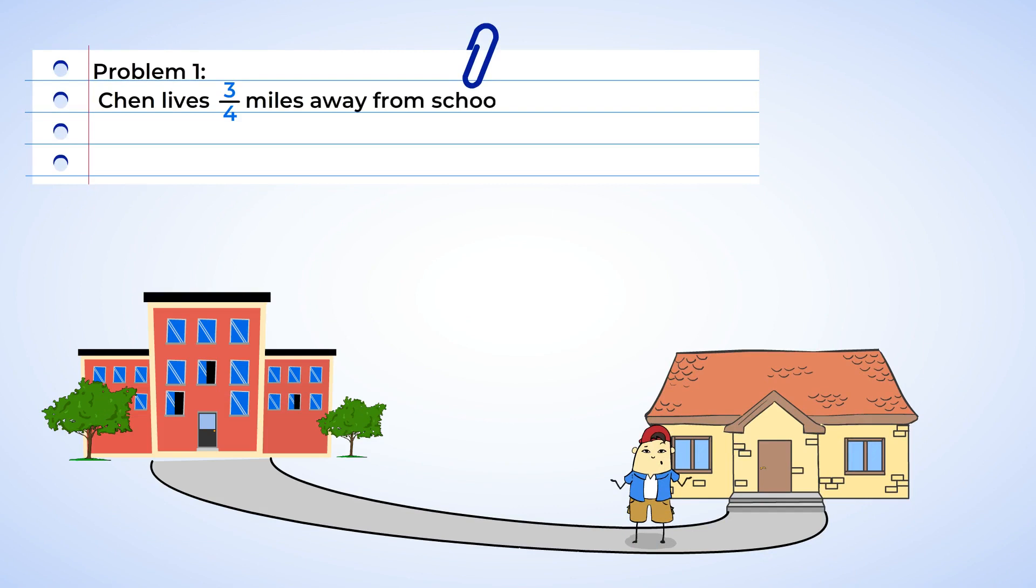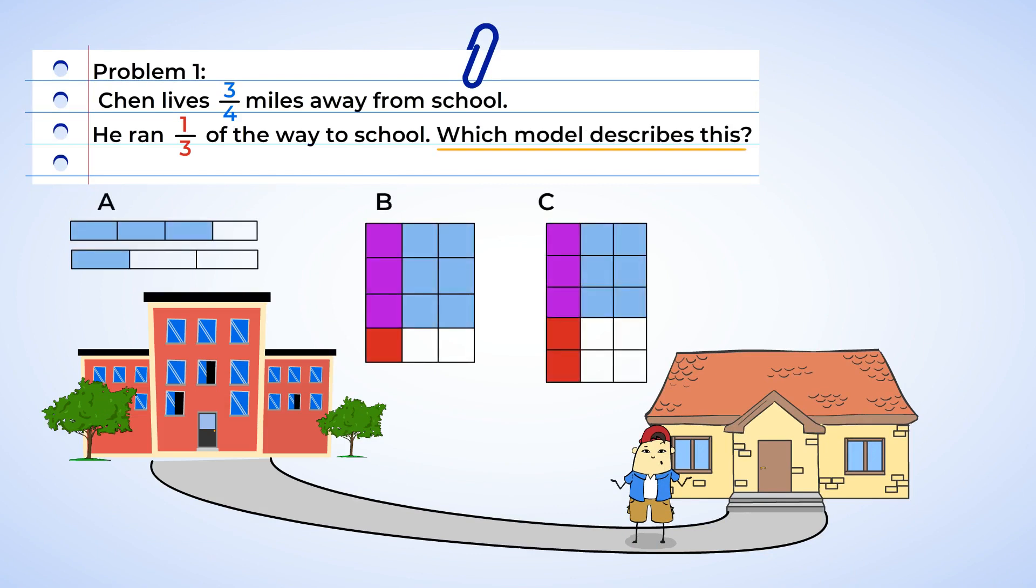Chen lives three-fourths of a mile away from school. He ran one-third of the way to school. He wonders now which model describes this and how many miles did he actually run? Chen ran one-third of the total distance to school. Well, the word of indicates multiplication.